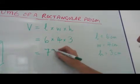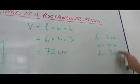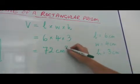So that's 72 centimeters cubed. It's a volume.